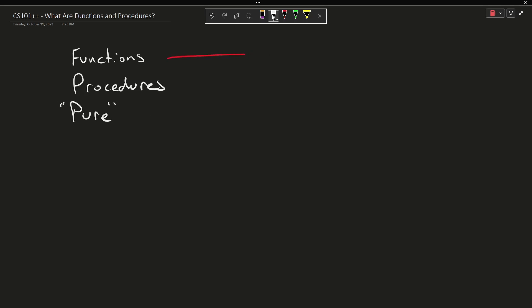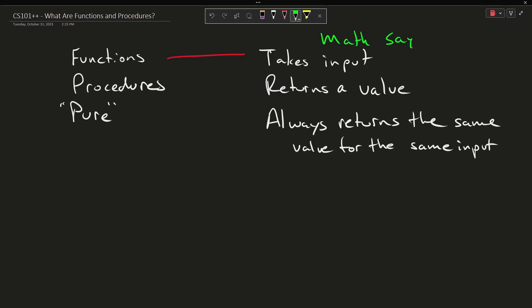So from the mathematical perspective a function returns a value and always returns the same value given the same input. This is what math tells us. So if you have taken algebra then you may have seen something like f of x equals x squared. That is a function from the mathematical perspective.